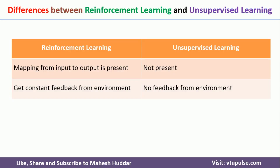Now we will see the differences between reinforcement learning and unsupervised learning. The first difference is that in reinforcement learning, there is a mapping from input to output — we know the initial state and the goal state. But in unsupervised learning, there is no such mapping. Whatever data is given, we have to categorize it into different clusters, perhaps using a distance measure to identify similarity between data points — but there is no mapping from input to output.